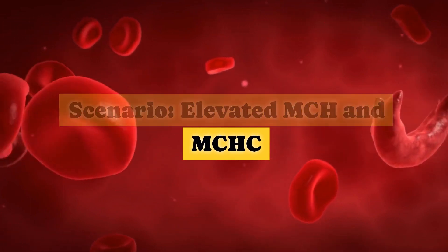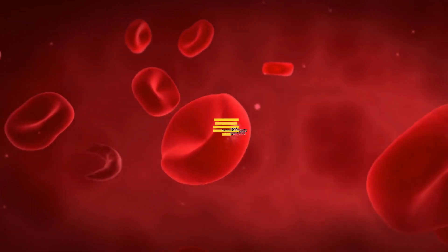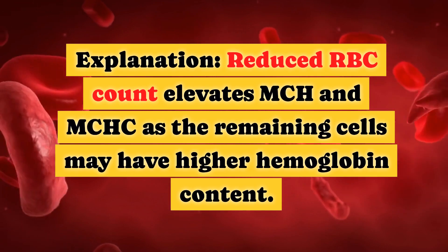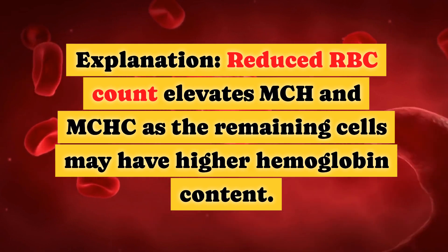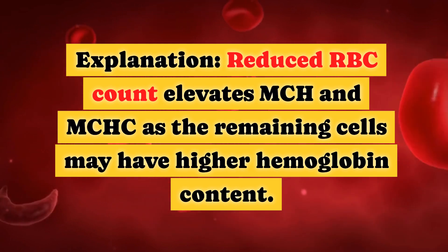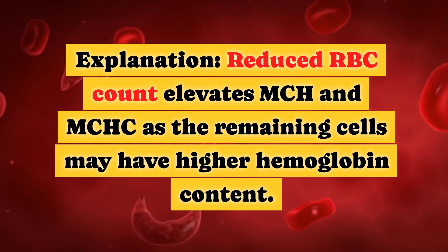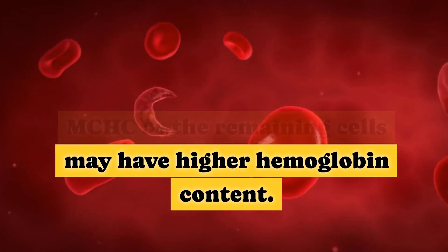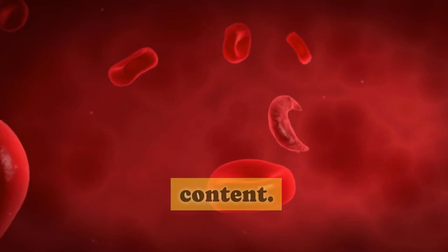Hemolytic Anemia Scenario — Elevated MCH and MCHC. Reduced RBC count elevates MCH and MCHC, as the remaining cells may have higher hemoglobin content.